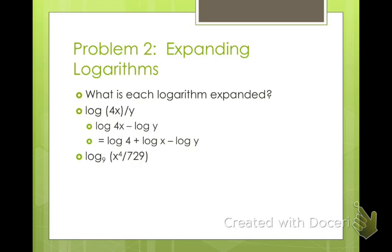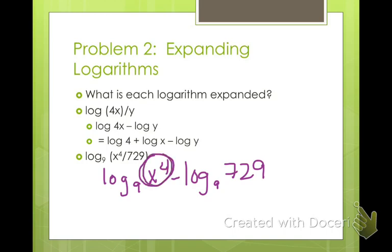What about this one? Log of 9, x to the 4th divided by 729. We have a division, so we're going to subtract. So I have log base 9 of x to the 4th minus log base 9 of 729. What else do I have going on? Well, I have this power here. Exponent raised to an exponent. What do we do? We multiply. So I'm going to bring this out front and multiply it.